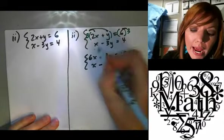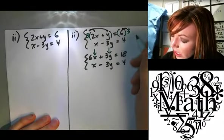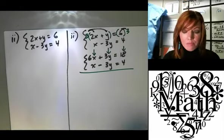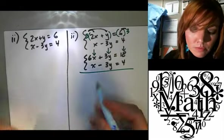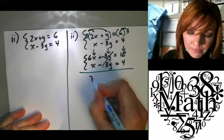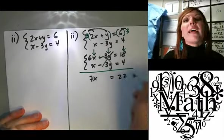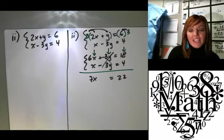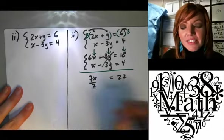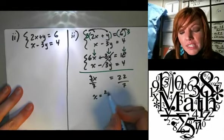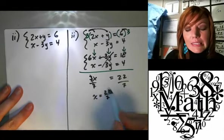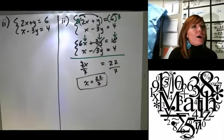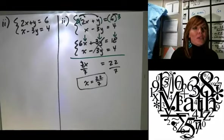The bottom doesn't change. So who can tell me when I add them together what I end up with? Michael? 7x equals 22. Isn't that going to be fun? Okay. What do I do next? We get x by itself, Hannah. Divide by 7. Sometimes, you don't end up with fractions often in these, but every now and then, don't shoot the messenger here.